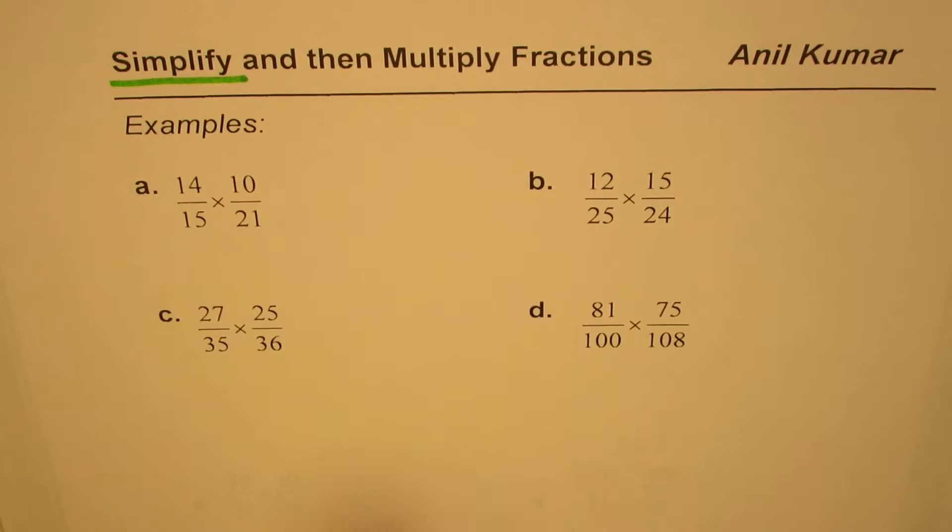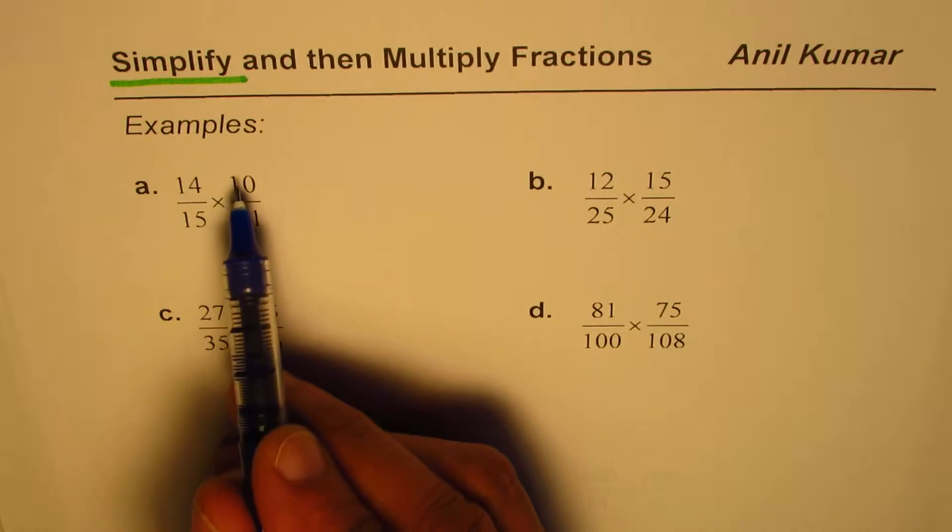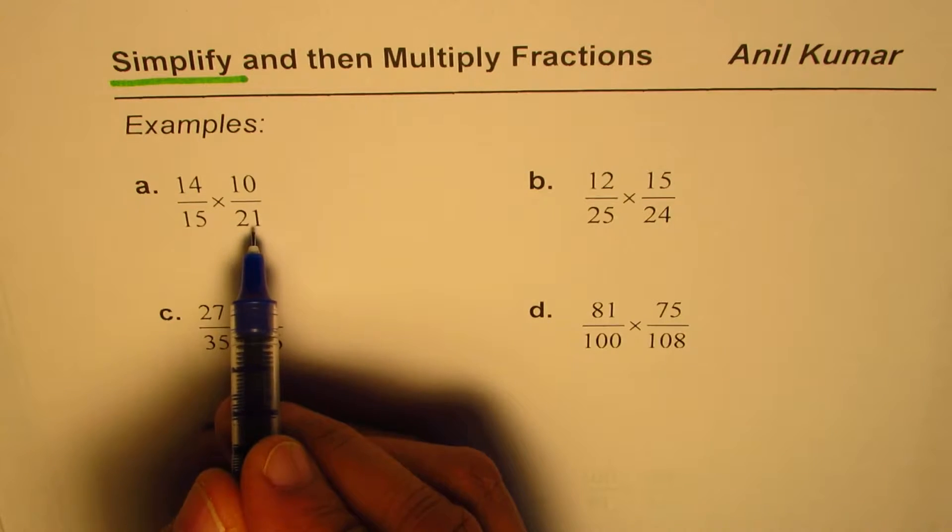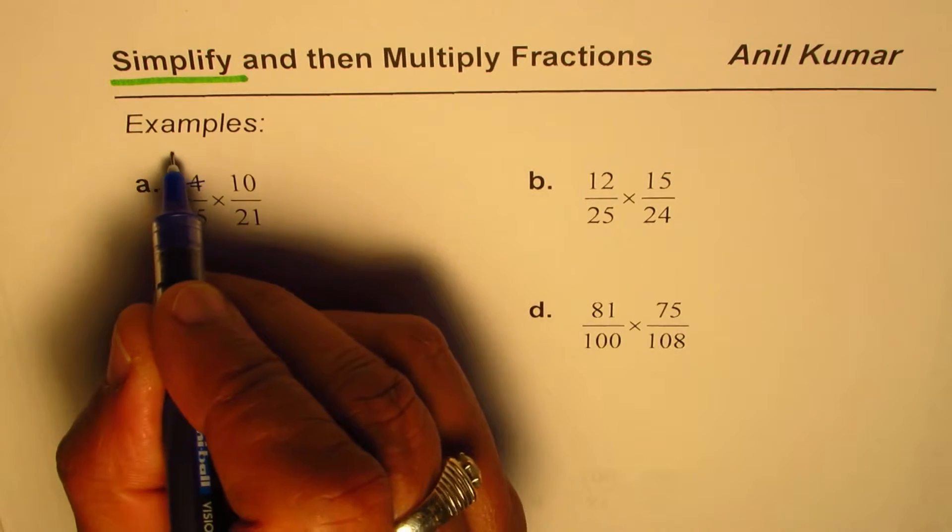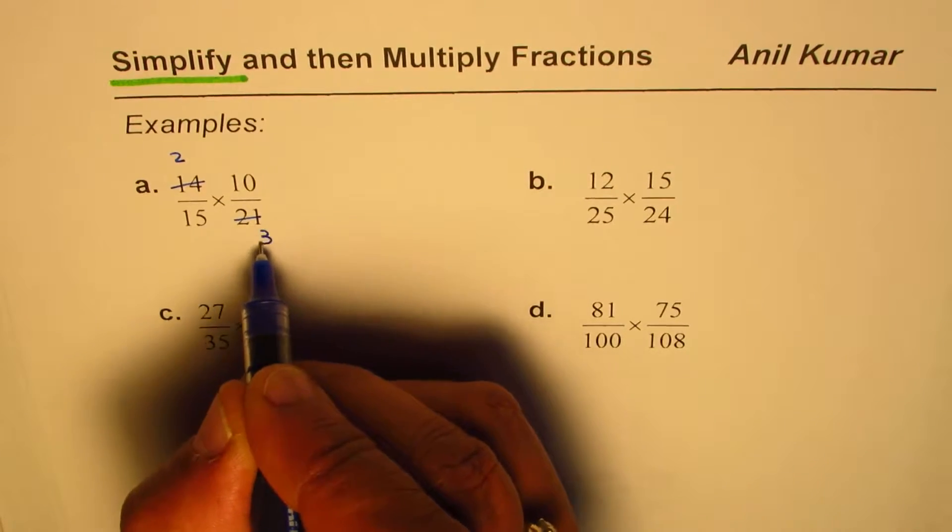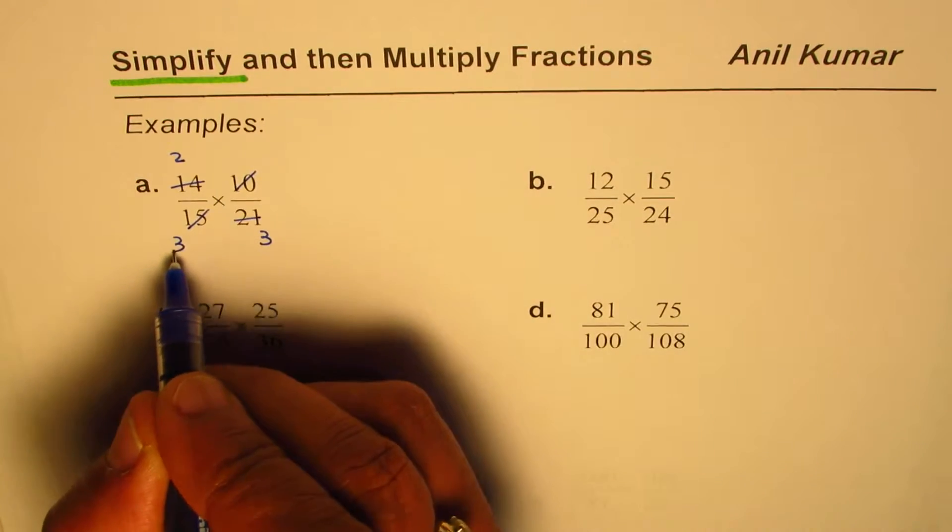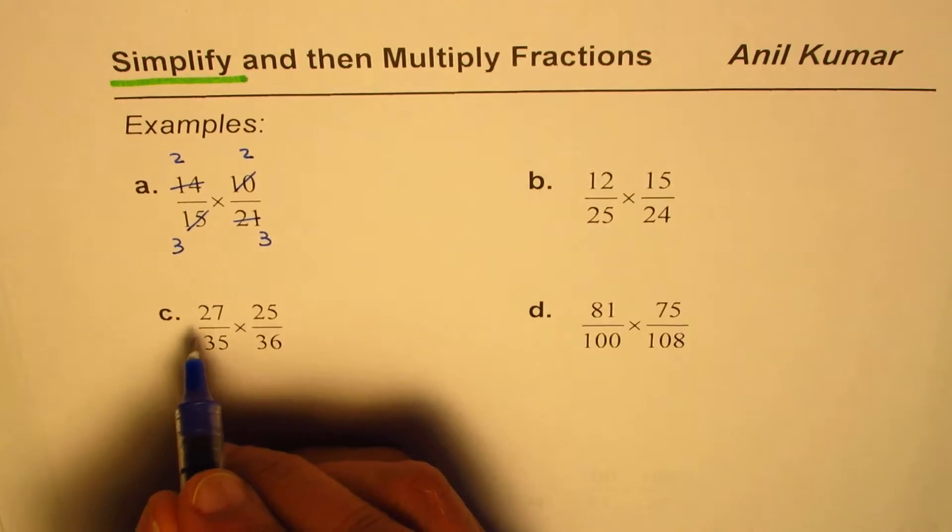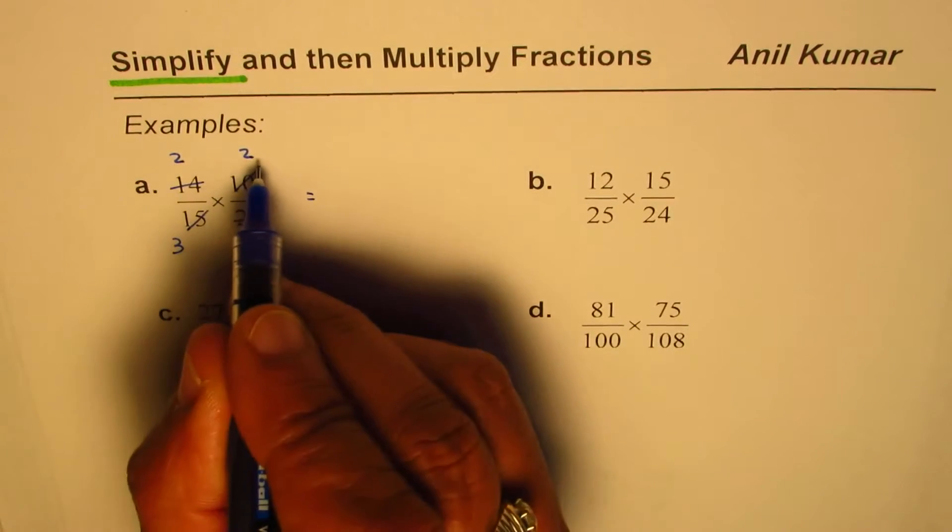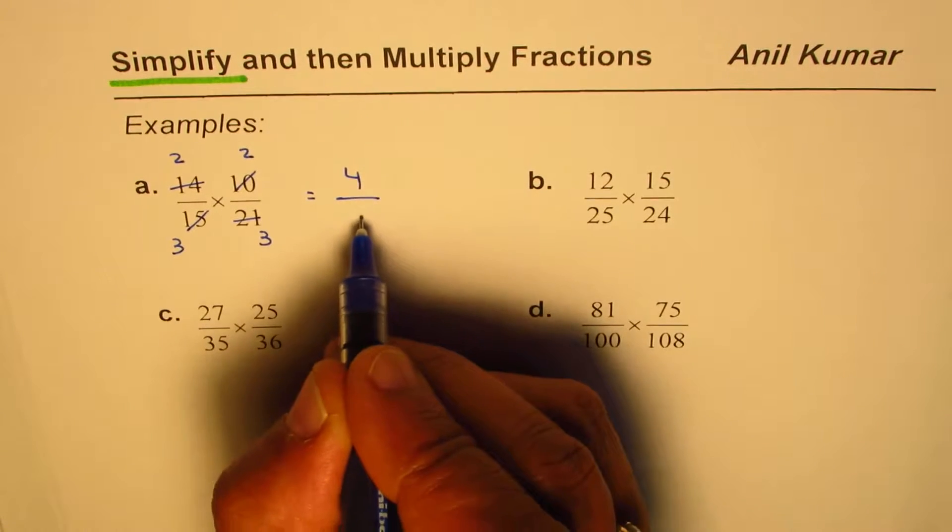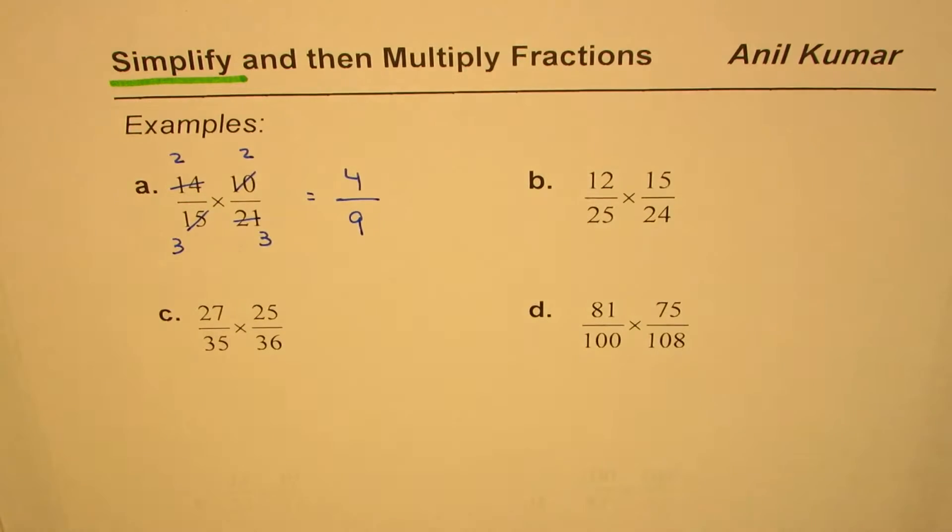14 over 15 times 10 over 21. We can divide these by 7, right? 7 times 2 is 14, 7 times 3 is 21. These two could be divided by 5: 5 times 3 and 5 times 2. Now we can multiply the numerators: 2 times 2 is 4. Denominators: 3 times 3 is 9. And we get the fraction in the lowest terms.